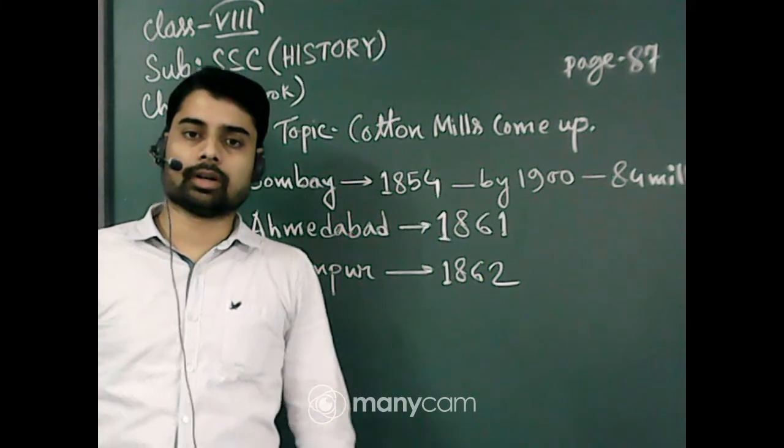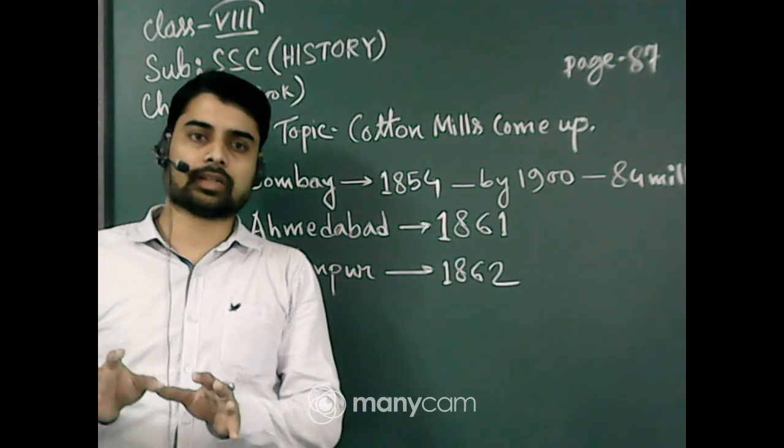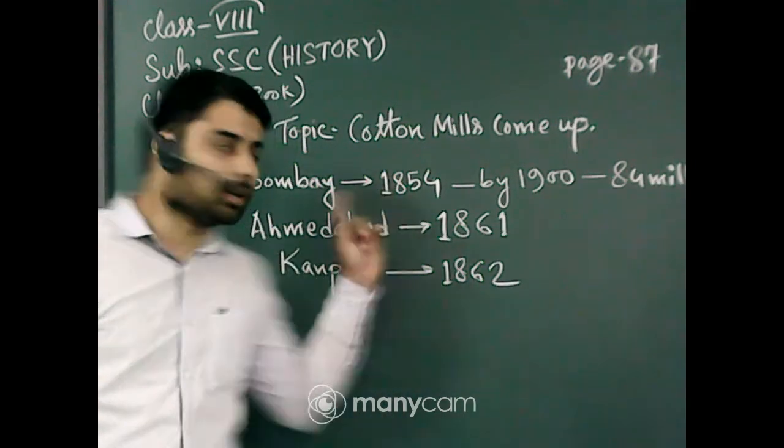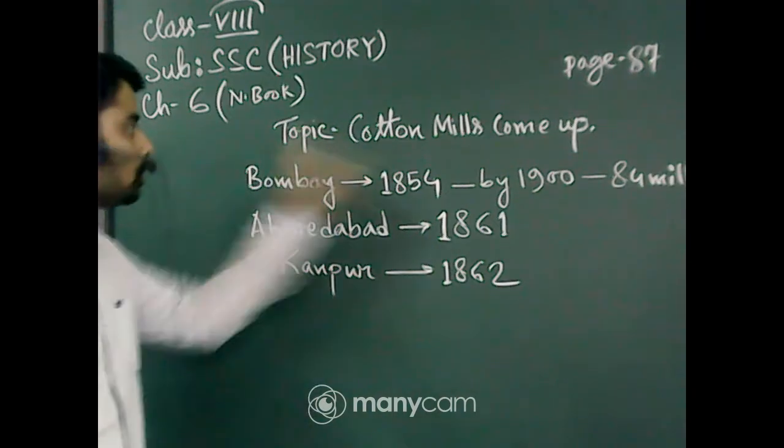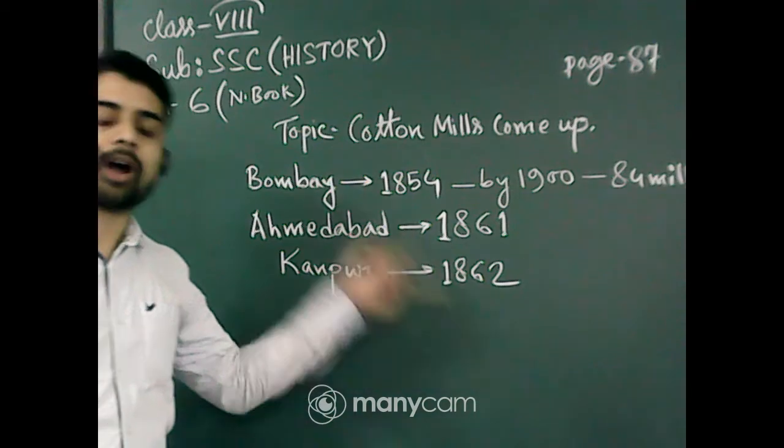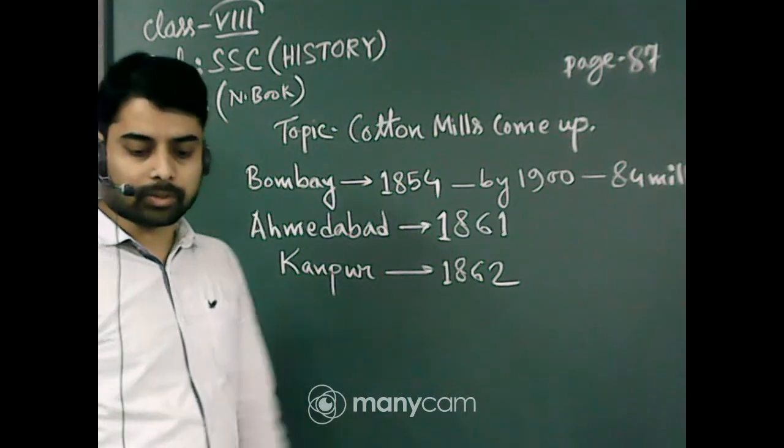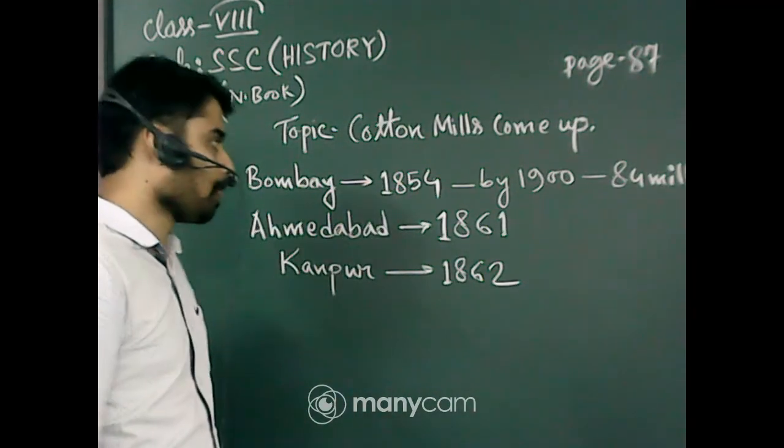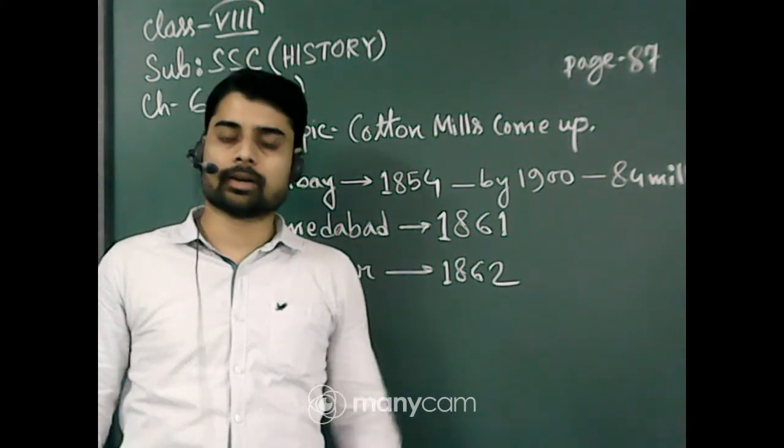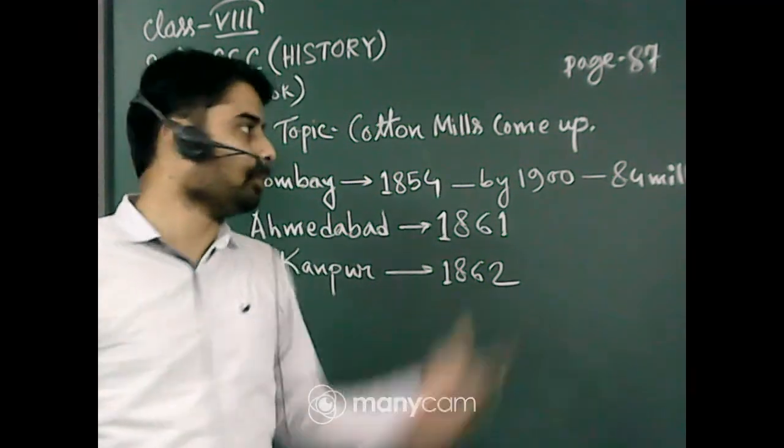A lot of people lost their jobs, though some Indian cottage textile industries survived. In this subunit we will discuss how cotton mills came up and how cotton mills were established in India after industrialization in Europe. The first cotton mill was established in 1854 in Bombay.